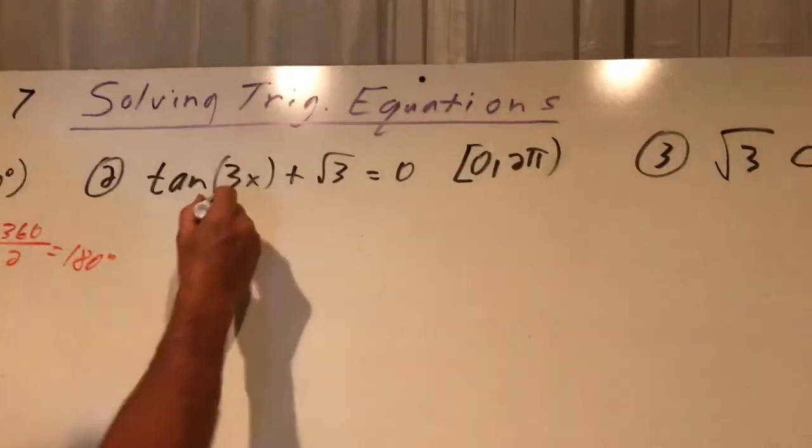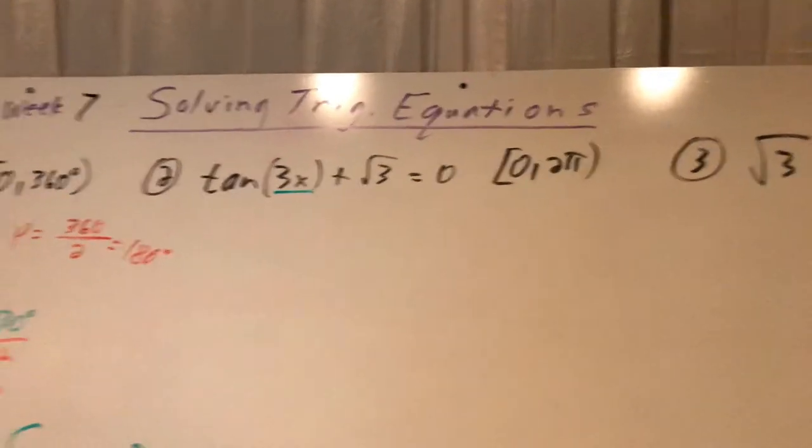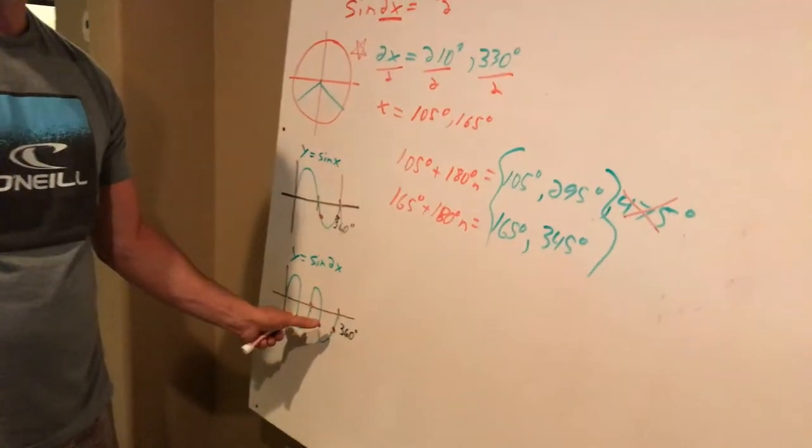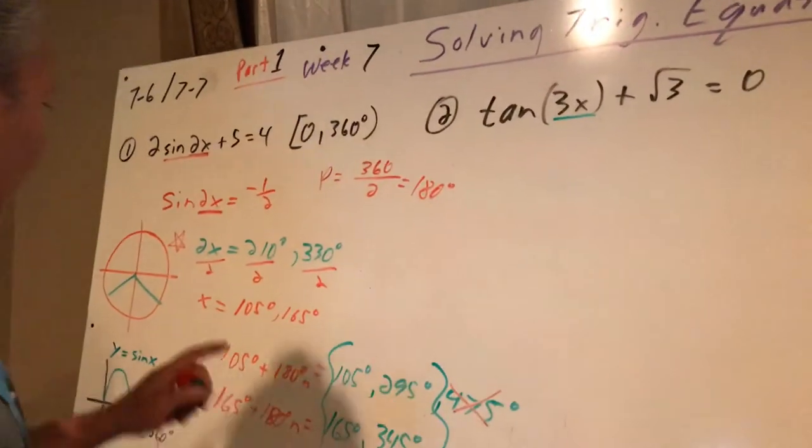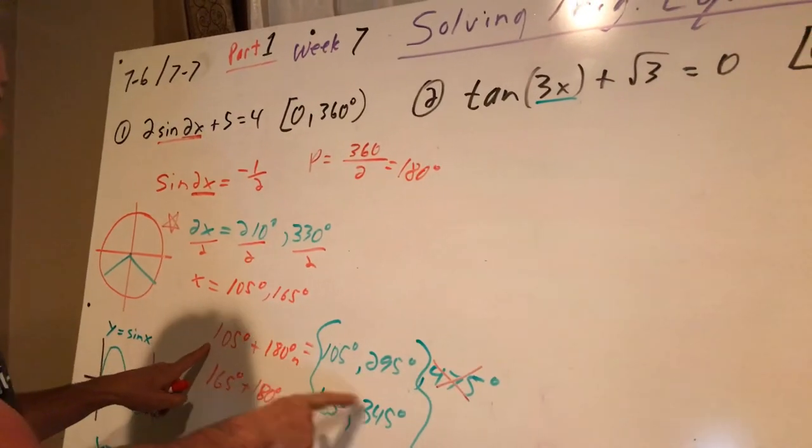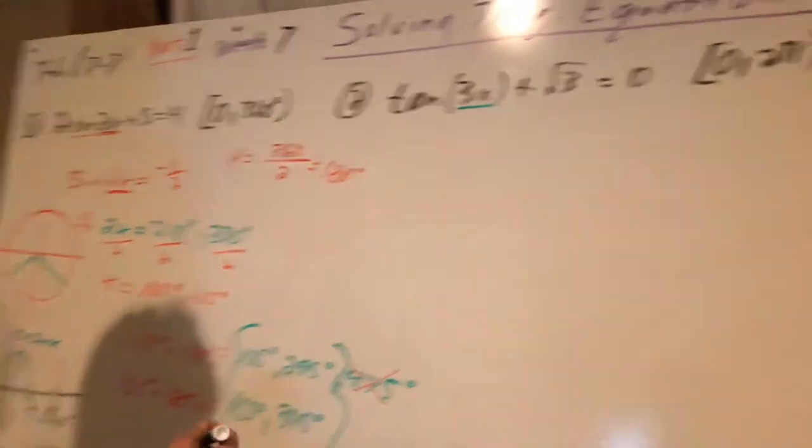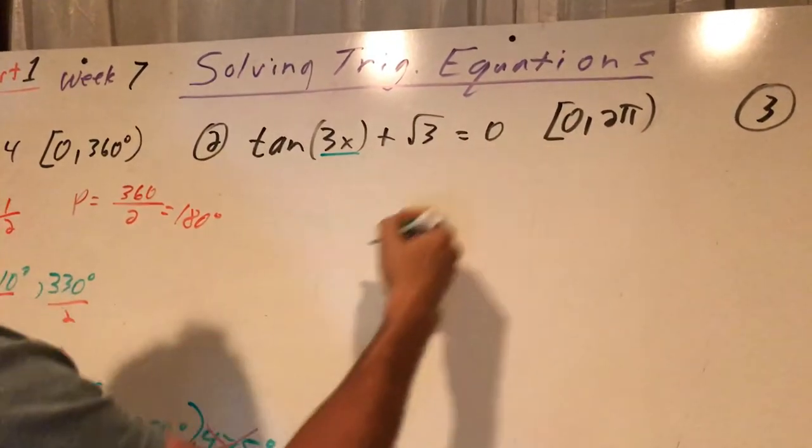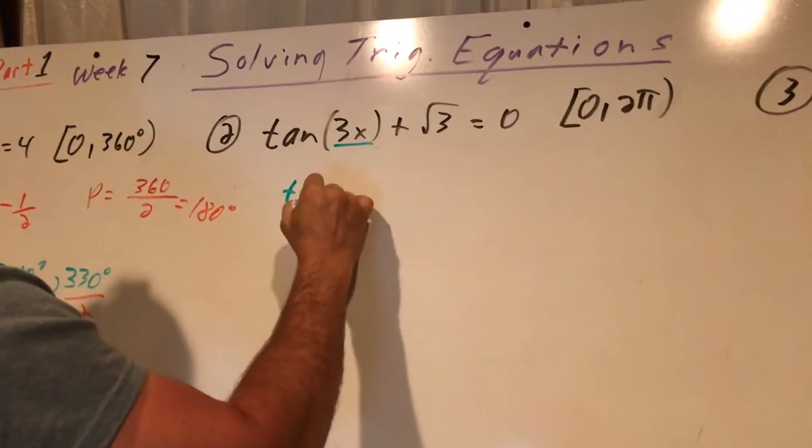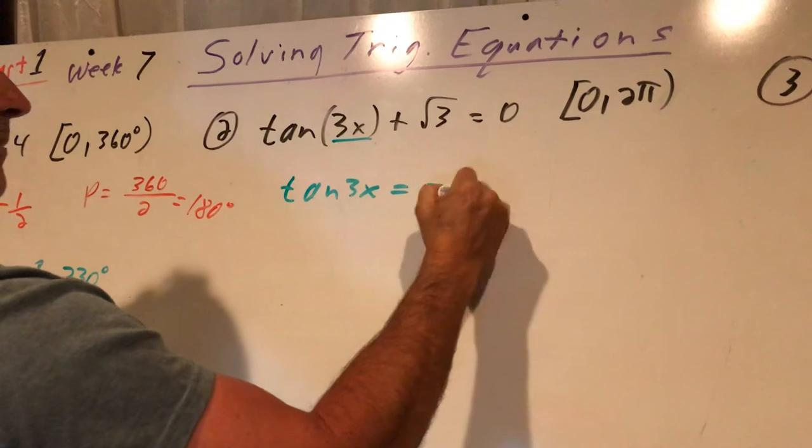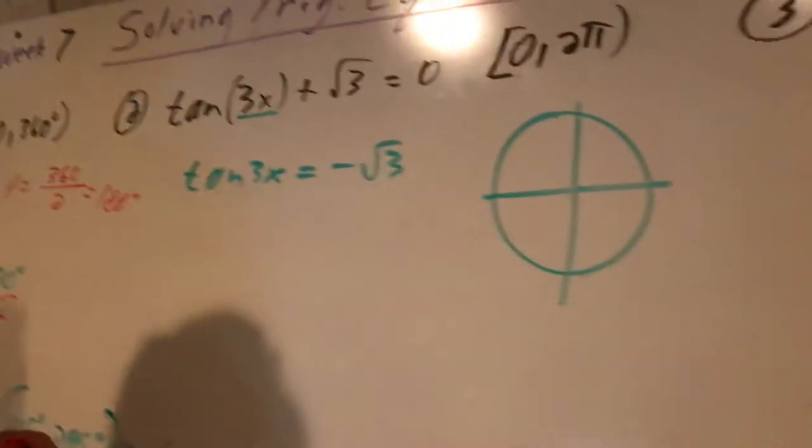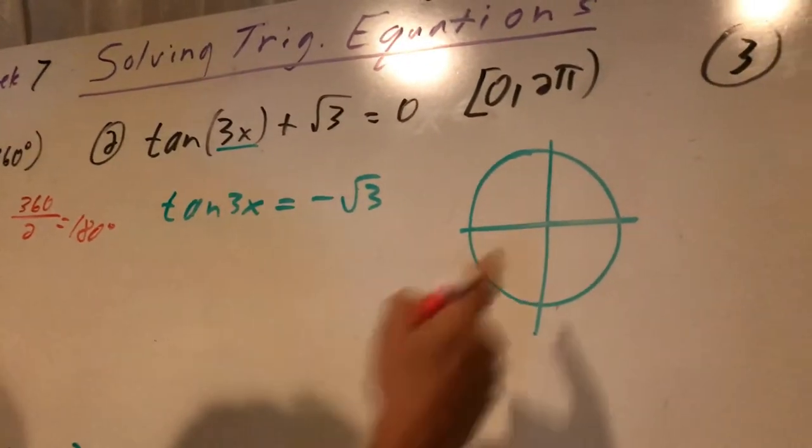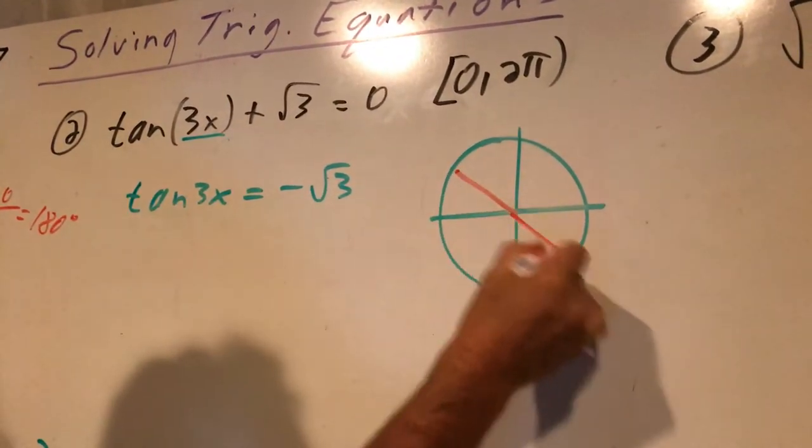Problem number two. This is 3x. That's going to allow, instead of two revolutions here, it'll allow three of them. It'll have even more answers, maybe like six answers. And we just need to not worry about that, really. But add the period again until we're out of range and we'll have all of our answers there. We're going to get it alone. Minus root 3. Notice I'm in radians as well. Tangent of 3x equals negative root 3.